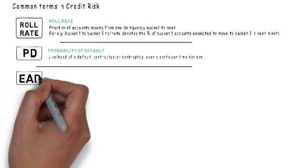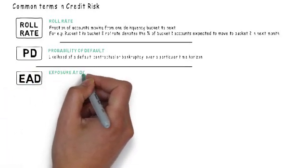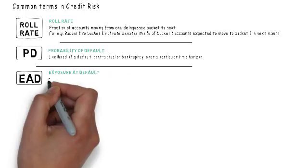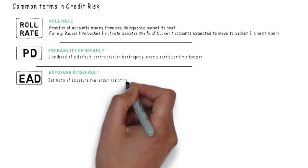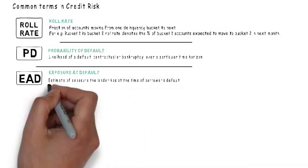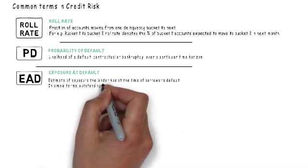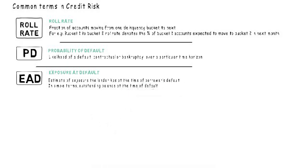Next is EAD. EAD refers to exposure at default. As the name indicates, it is the exposure the bank has when the borrower defaults. In simple terms, it is equal to the outstanding balance at the time of charge-off or bankruptcy.